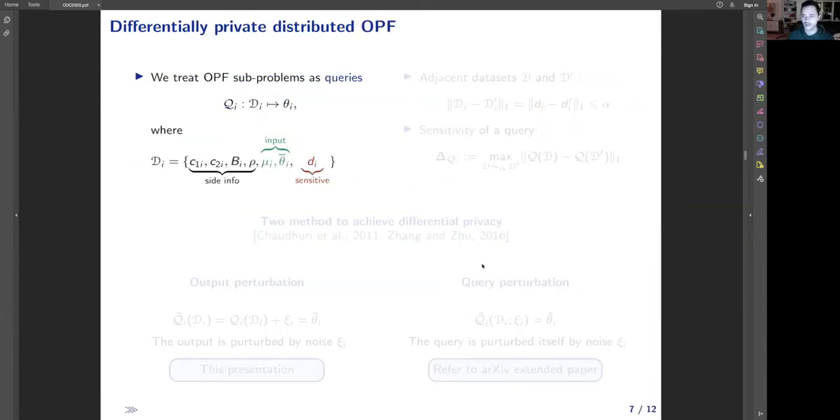In our work, we use differential privacy to make differentially private every subproblem used in distributed OPF computation. We consider it as a mapping from OPF dataset to local voltage updates, where the load information is the only sensitive data to be protected. To protect this data, we want to make it indistinguishable from any other load different by quantity alpha. For design of this algorithm, we need information about mechanism query sensitivity, how voltage angles change with respect to any alpha change of the local dataset. Using this information, we can make this query differentially private.